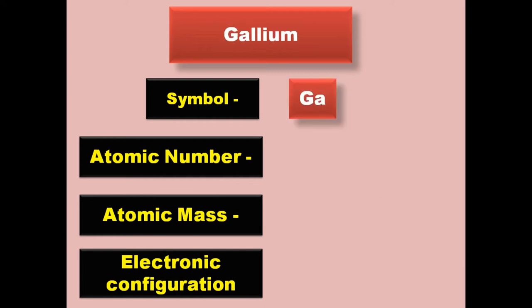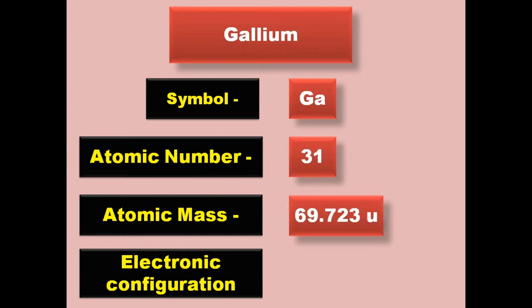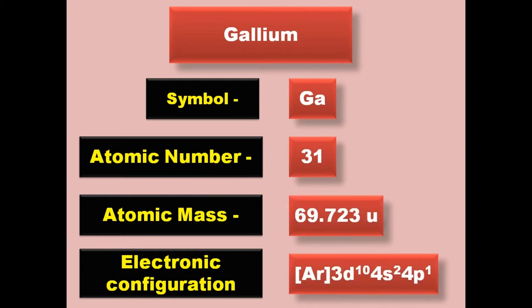Gallium has symbol Ga, atomic number 31, atomic mass 69.723, electronic configuration [Ar] 3d10 4s2 4p1. Gallium is a post-transition metal and exists in solid form at room temperature.